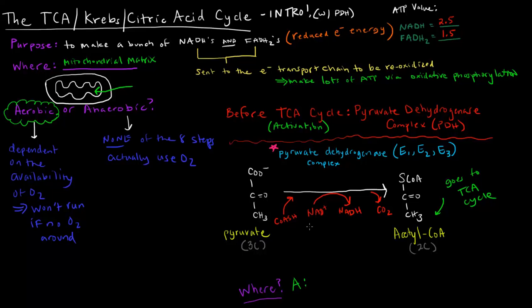So we added a coenzyme A, an NAD+, and we got out an NADH and a CO2. So in addition, there are actually three more cofactors that are involved in this. And those three cofactors are TPP, lipoate, and FAD. All of these things are required in order to get this reaction to run.